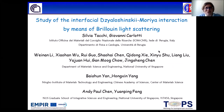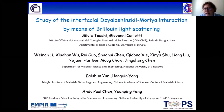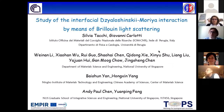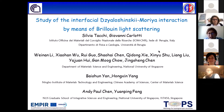Good afternoon everybody. Thank you Paola for the introduction and Giovanni for inviting me. In this presentation, I'm going to talk about the study of the interface of the logistic Moria interaction by using Brillouin scattering. In particular, I'm going to talk about our recent study about the interfacial DMI in a cobalt iron boron film grown on a BTO substrate as a function of the BTO termination. This work is a collaboration with the group of Professor Chen of the National University of Singapore, which prepared the sample, and a group of Professor Yang of the NIMPO Institute, which performed theoretical calculations.